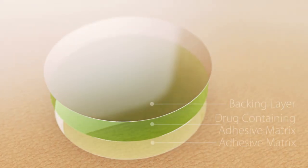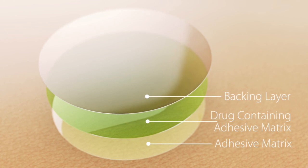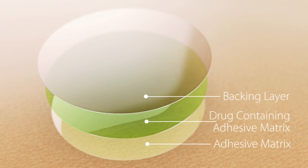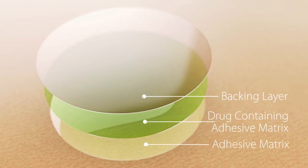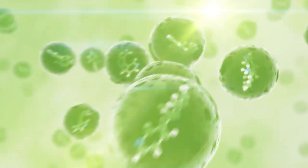The basic components of the transdermal patch are an outer backing film of plastic or foil and a pressure-sensitive adhesive that anchors the patch to the skin. The drug is dissolved or dispersed in an inert polymer matrix that provides support and a platform for drug release.